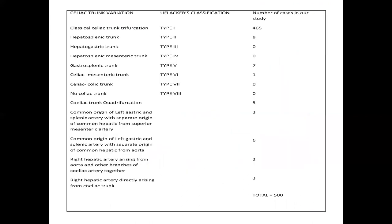Celiac trunk variation was classified according to Ufflacher's classification, where 465 cases had classical celiac trunk trifurcation, followed by hepatosplenic trunk, hepatogastric trunk, and others.